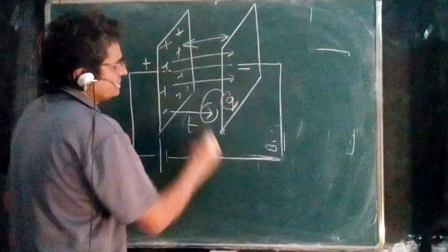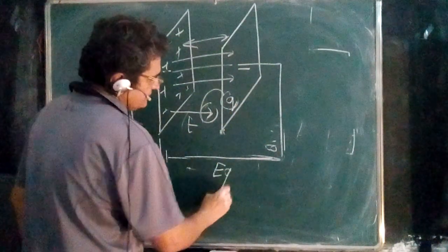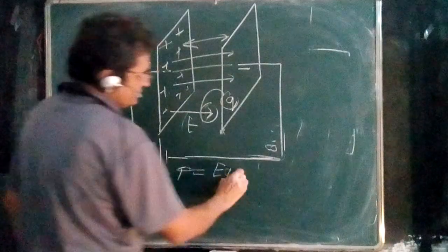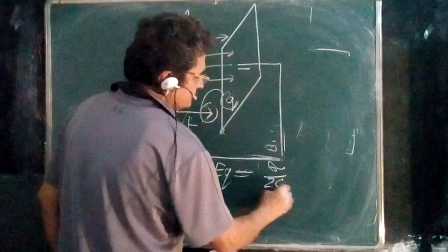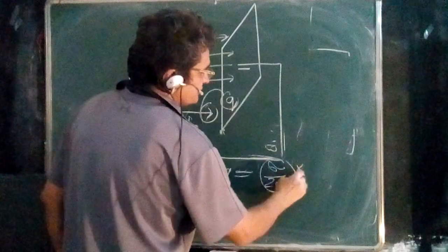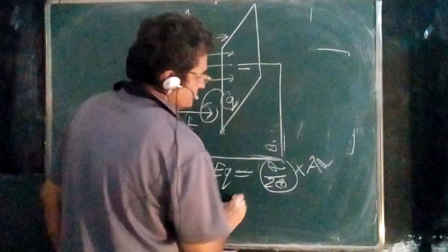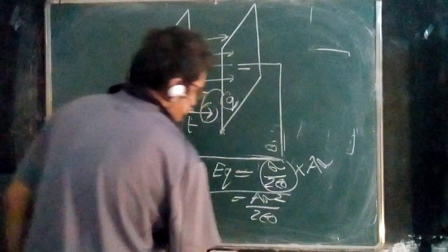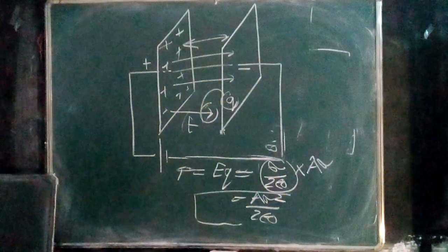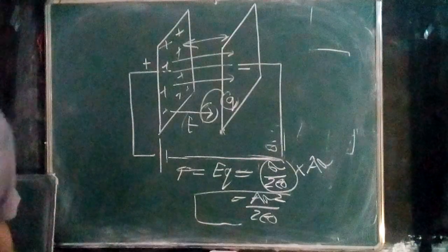Only then you will write the force. So here the force will be: electric field of one was Sigma upon twice E zero, and the charge of the other was area times Sigma. So it will be area times Sigma square upon twice E zero. This care should be taken while doing such kind of problems.